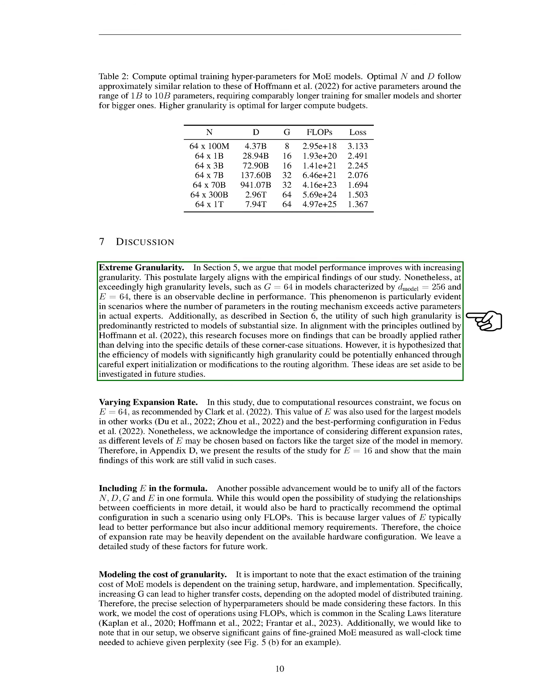Section: Varying Expansion Rate. In this section, we delve into the topic of varying expansion rates. Due to limitations in computational resources, we decided to focus on an expansion rate E of 64, as this was the recommended value and also the one used for the largest models in other studies, as well as the best performing configuration in certain cases. However, we recognize the significance of exploring different expansion rates since the choice of E can vary depending on factors such as the desired model size in terms of memory usage. To address this, we've included in the appendix the outcomes of our study for an expansion rate of 16, demonstrating that our main conclusions remain applicable even with this variation.